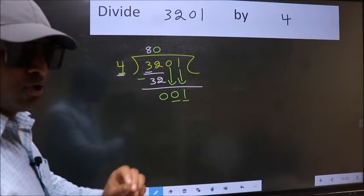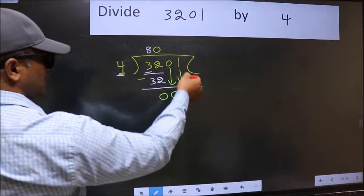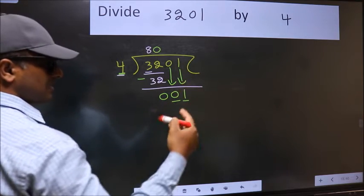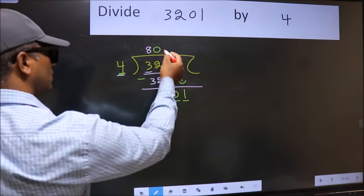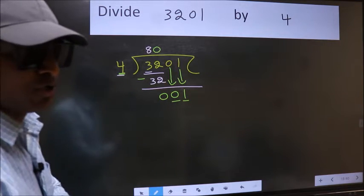Why is it wrong? Because just now you brought this number down. And in the same step, you want to put dot, take 0, which is wrong.